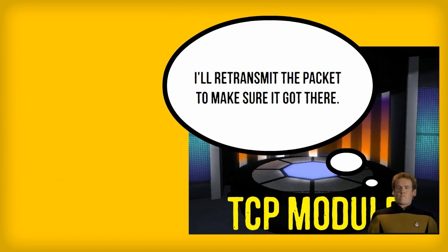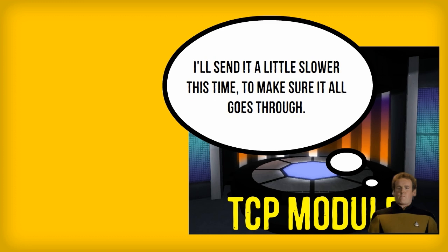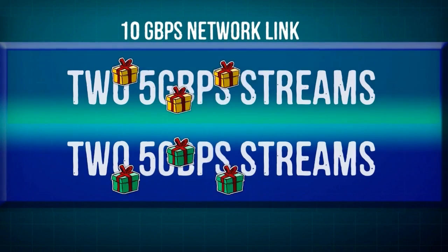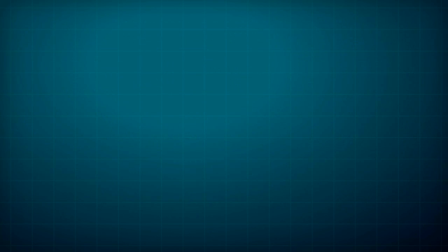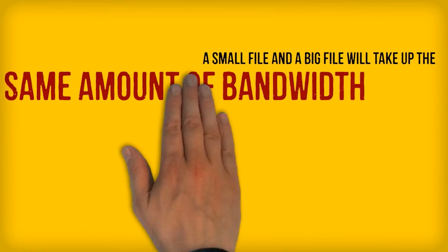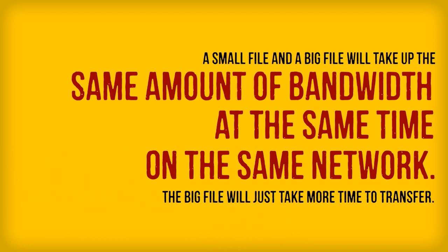Sometimes packets can be lost, especially if there's network congestion. If the original sender never receives the acknowledgement, the TCP module retransmits the packet. What's interesting is that the TCP module treats dropped packets as a sign of congestion and scales back the rate at which it sends data. If there's congestion on a network link, all TCP modules using that link scale back and slow down until they all reach equilibrium.